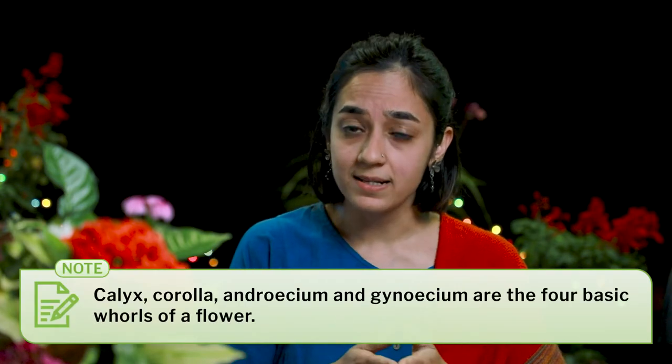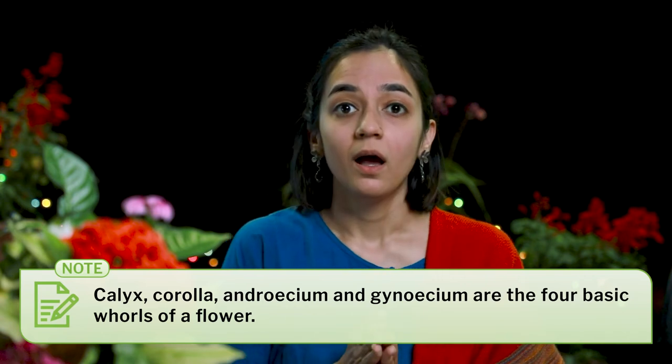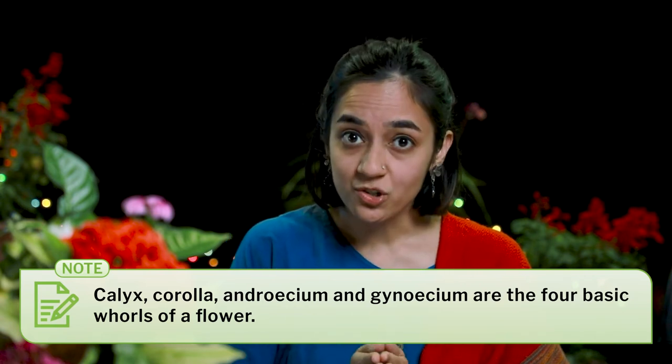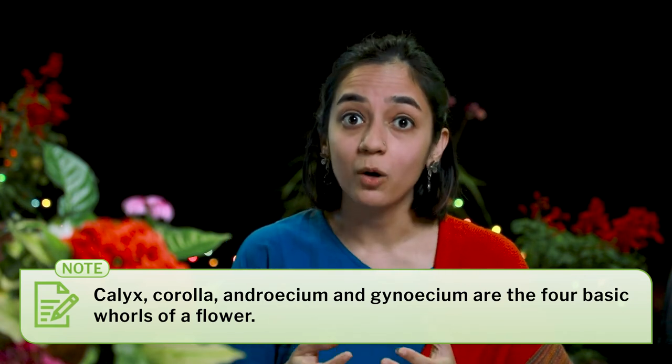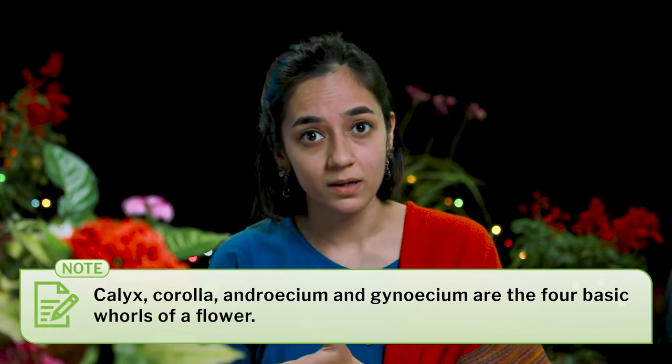At this point, we can introduce them to the different whorls of the flowers like calyx, corolla, androecium, and gynoecium. After which, we can question them about whether all the flowers have all the whorls. They might discover that some of them have all the whorls while the others don't. At this point, it is a good idea to talk about complete and incomplete flowers.